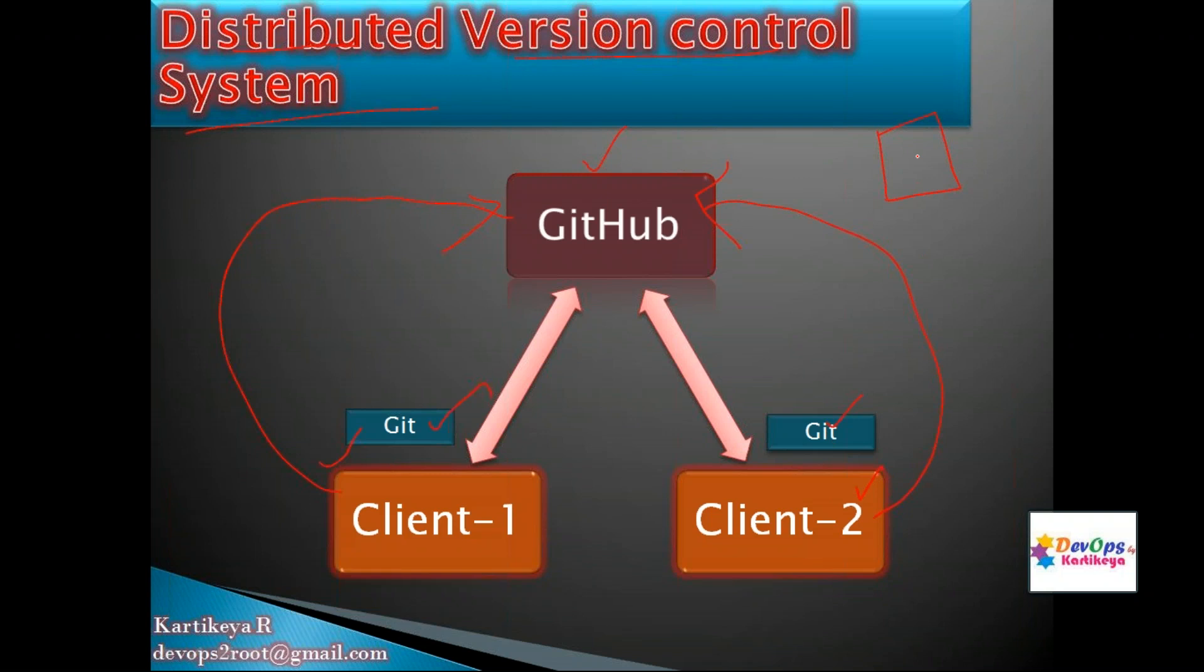Developers write code locally, which propagates to the local repository. Then you push to GitHub or another third-party repository. Another person can clone your code, make modifications, and push changes back to the repository.